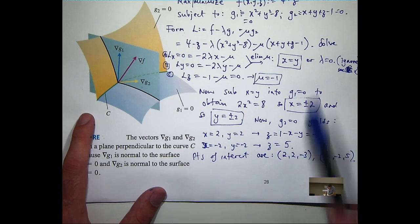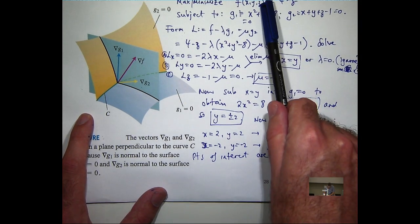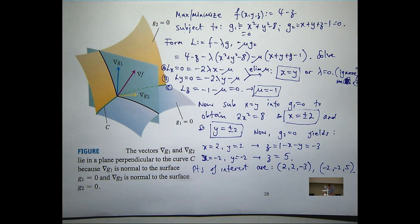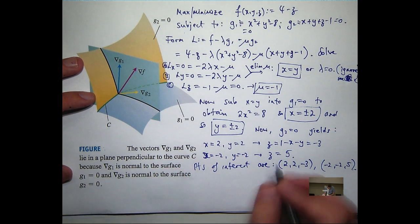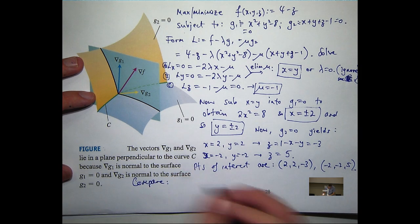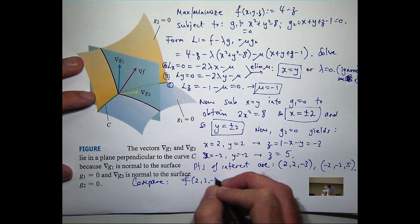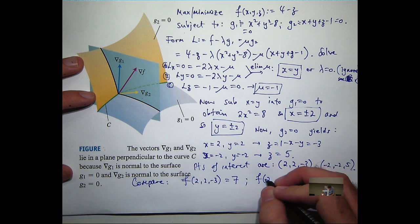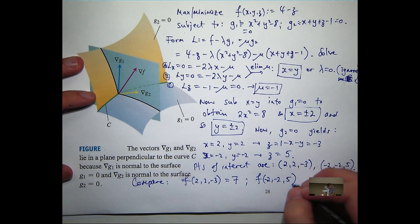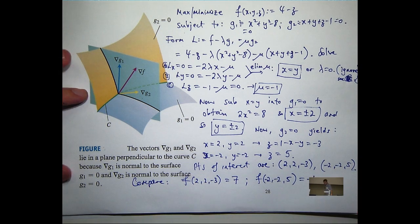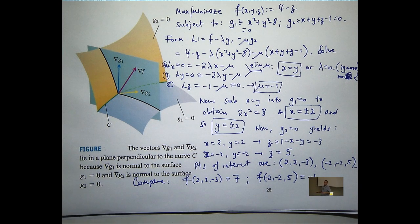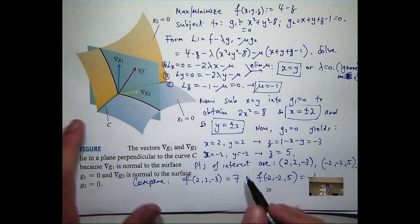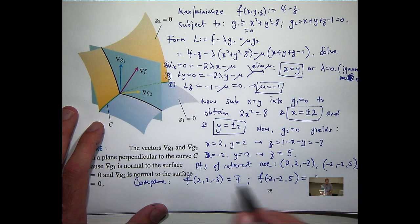So all we need to do to finish this problem then is to sub these points into our original function and see, compare them. Which one gives the maximum value, which one gives the minimum value? So I'm going to get 4 minus minus 3, which is 7. And something like minus 1. So this will be the maximum value. This will be the minimum value.